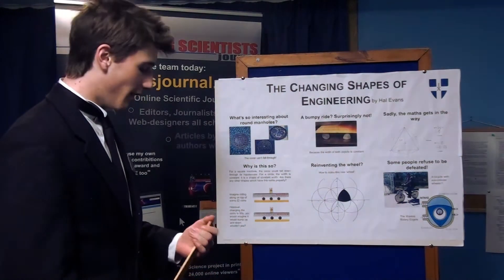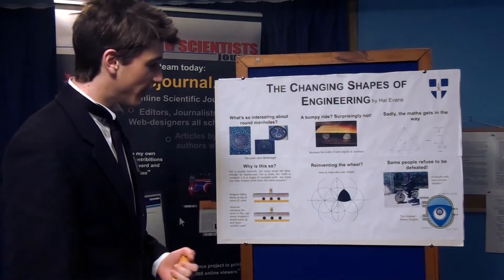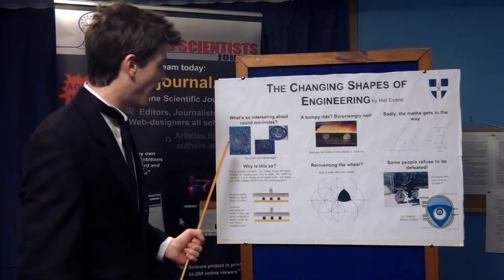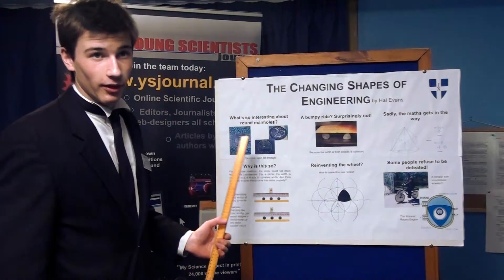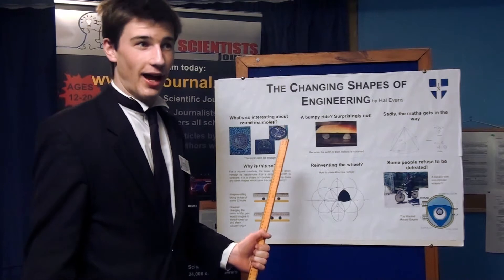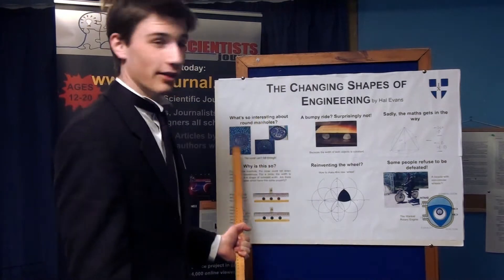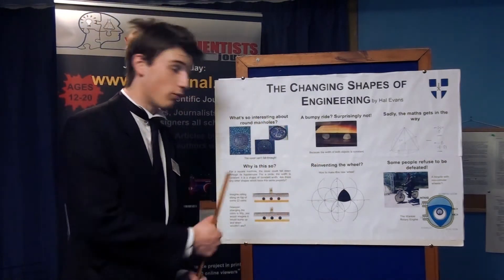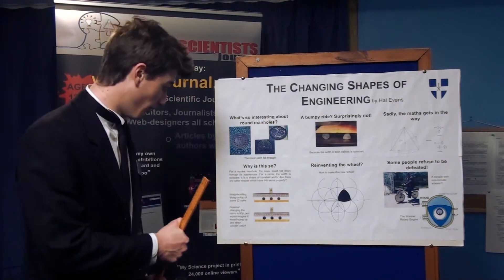So I was interested in this aspect of the circle, and I was thinking: are there any other shapes that have the same property of constant width? Which is why it doesn't fall through the hole.